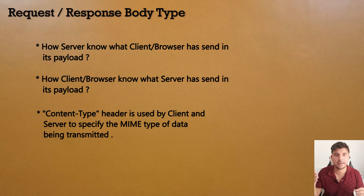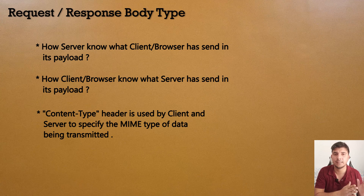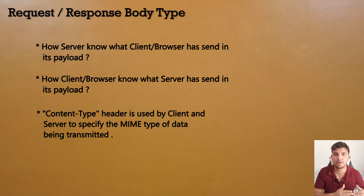This is communicated using the Content-Type header. In the request, the client attaches a Content-Type header containing the MIME type to indicate what sort of data it is sending. Similarly, in the server's response, the server attaches a Content-Type header to tell the client what sort of data it is sending in the body.